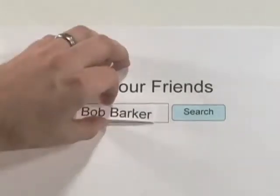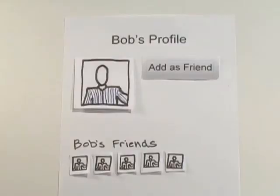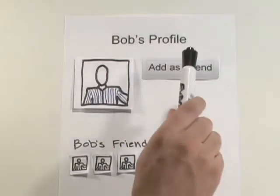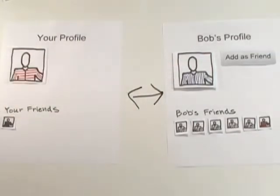You sign up for a free account and fill out your profile. Then you look for people you know. When you find someone, you click a button that says Add as Friend. Once you do this, you and that person have a connection on the website that others can see.